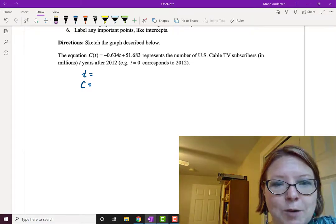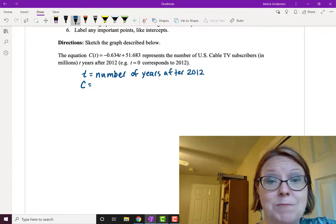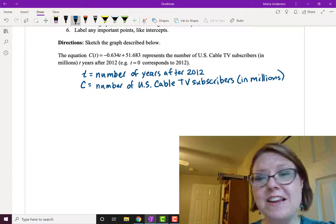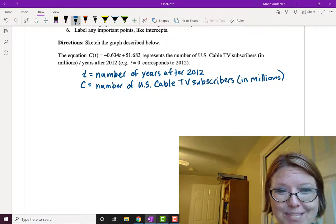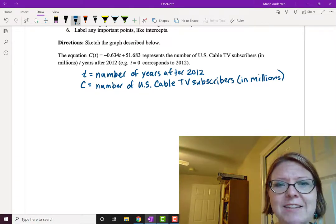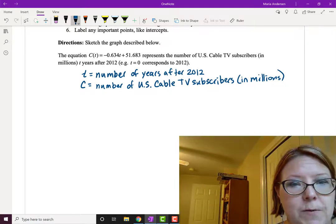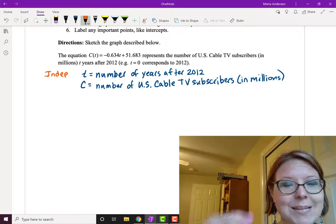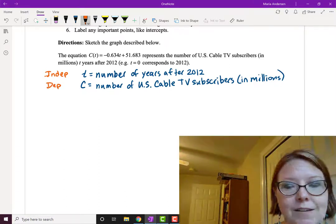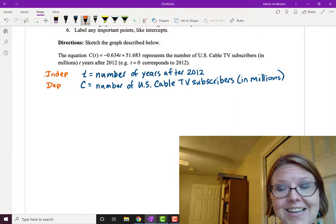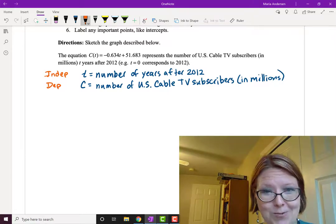t is the number of years after 2012. C is the number of U.S. cable TV subscribers in millions. Those two things represent the majority of words in the problem. The thing that's easy for us to track is the number of years after 2012, so that's our independent variable. The number of U.S. cable TV subscribers is something we measure every year, so that's the dependent variable. Which means that when we draw our axes, cable TV subscribers will be on the vertical axis and time will run on the horizontal axis.